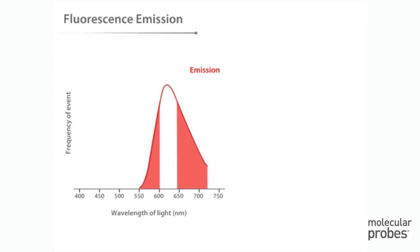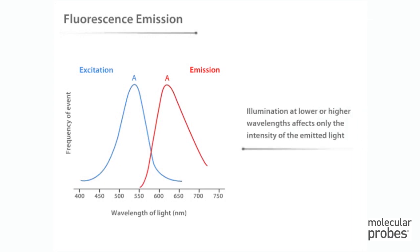However, this light will be less intense. It is important to remember that although illumination at the excitation maximum of the fluorophore produces the greatest fluorescence output, illumination at lower or higher wavelengths affects only the intensity of the emitted light. The range and overall shape of the emission profile are unchanged.